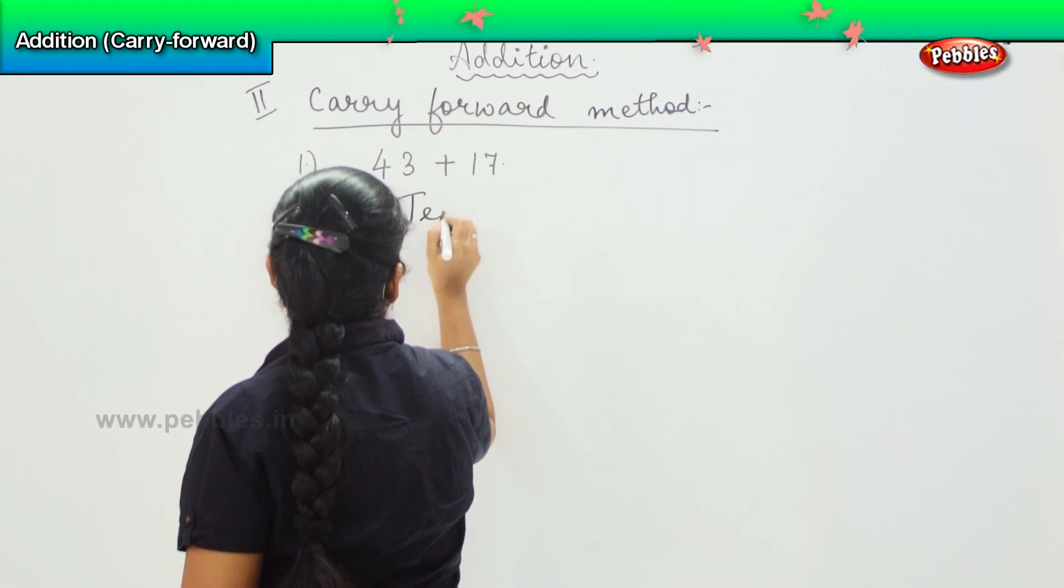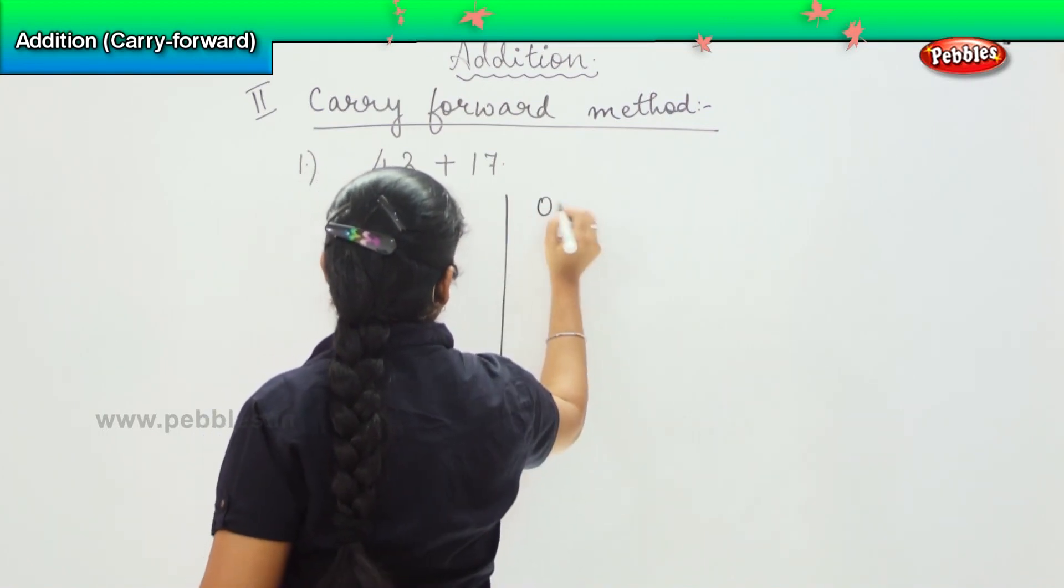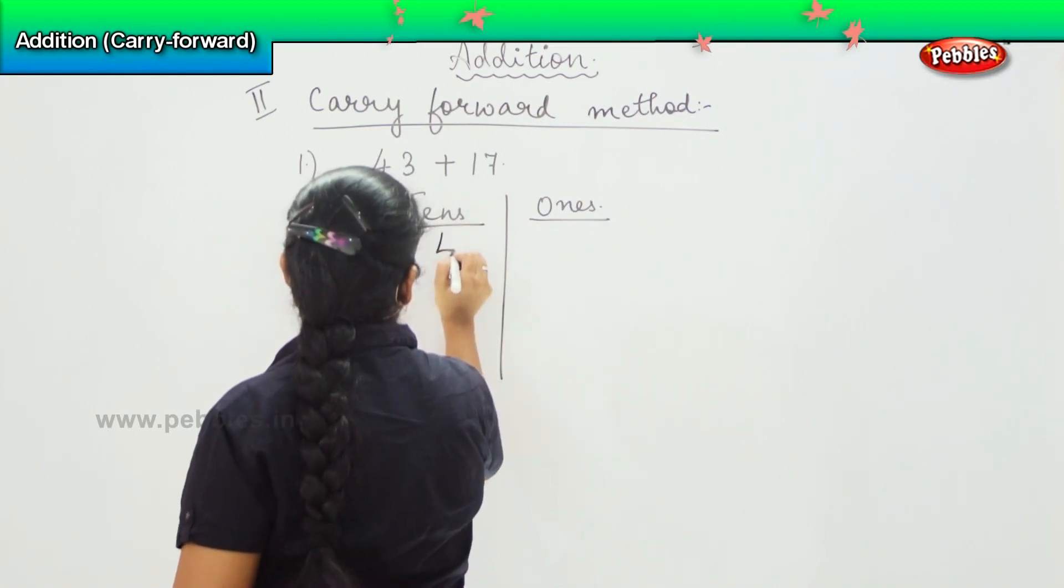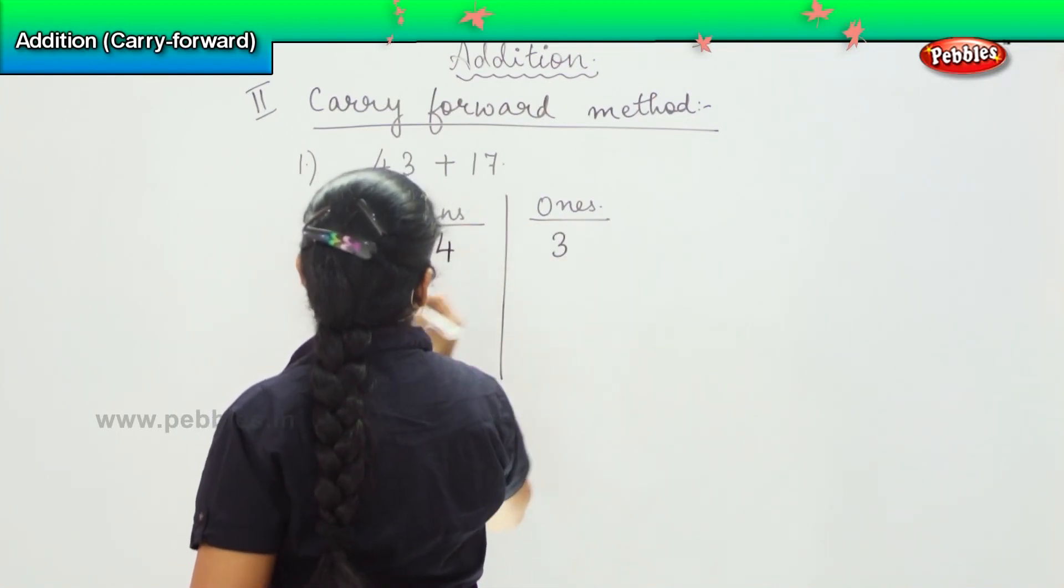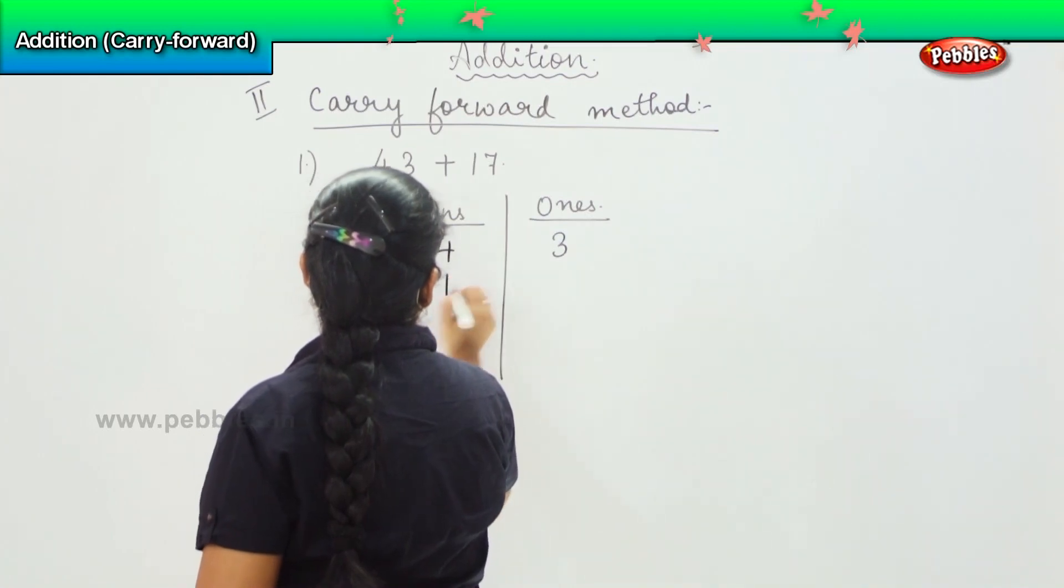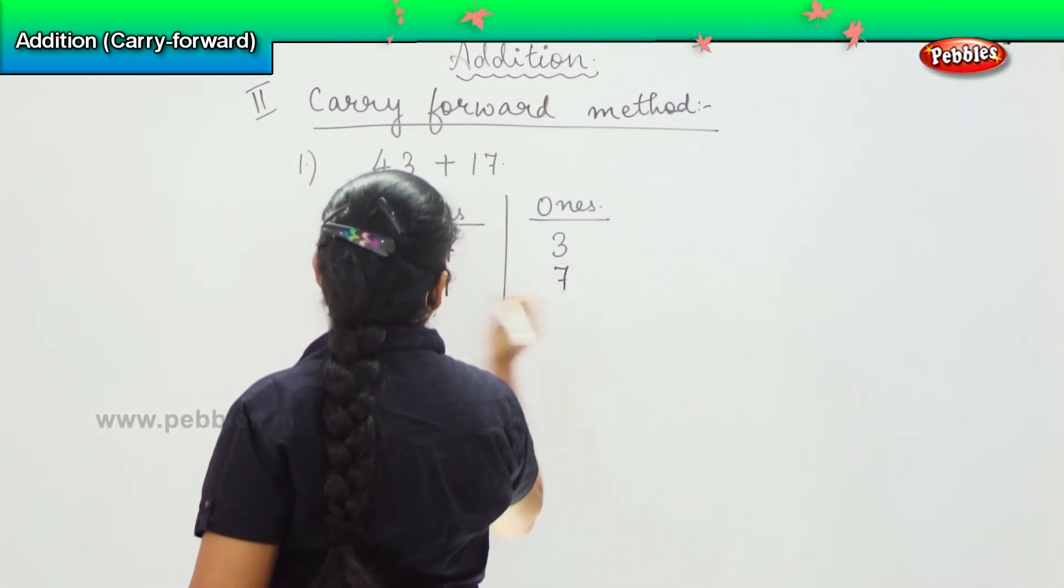First is splitting it into tens and ones. 43 can be written as 4 tens and 3 ones, and 17 can be written as 1 ten and 7 ones.